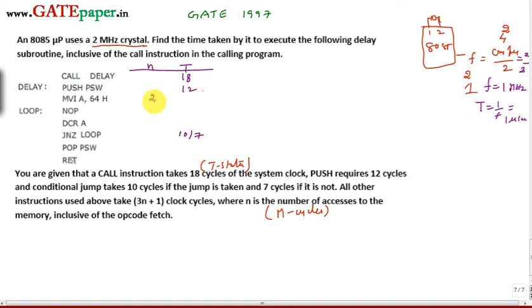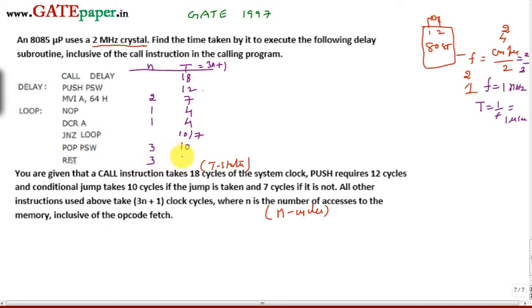For MVI A, 64H: T = 3×2 + 1 = 7 T-states. NOP is 1 machine cycle, giving 4 T-states. DCR is 1 machine cycle, giving 4 T-states. POP is 3 machine cycles: 3×3 + 1 = 10 T-states. RET is also 3 machine cycles, giving 10 T-states.